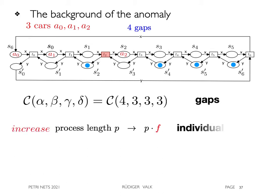When replacing back the gaps by individual co-cars, the processes have to be enlarged to obtain a recurrent transition sequence. The factor f of this enlargement is called the f-factor.